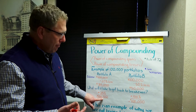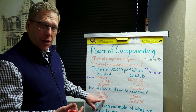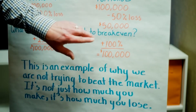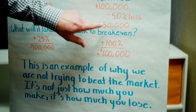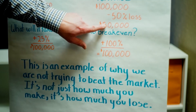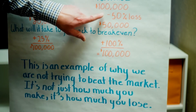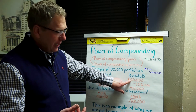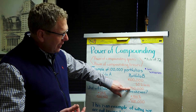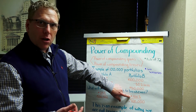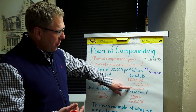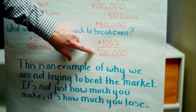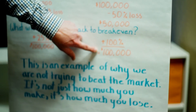On Portfolio B you don't have a hundred anymore — you have fifty thousand that you have to grow back to one hundred thousand. What's it going to take? You're going to need to make a 100 percent return on your fifty thousand to get back to a hundred thousand.